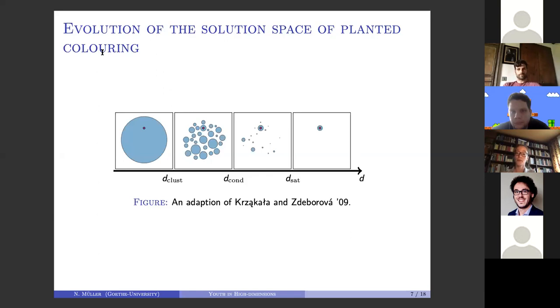For a small average degree, there are many solutions or colorings, and they are well connected. You can go from one to the other by just changing a small number of colors.